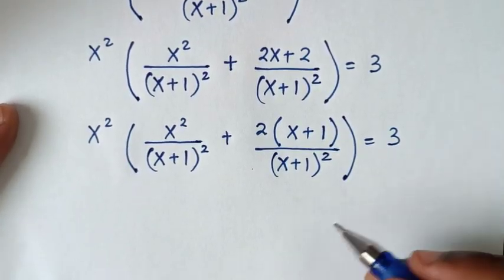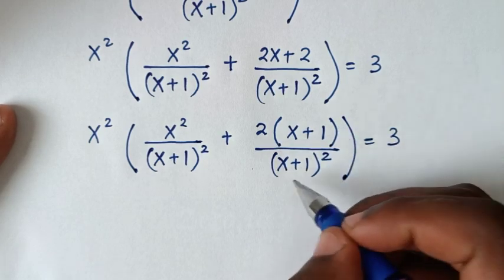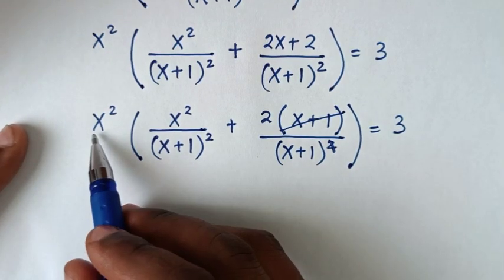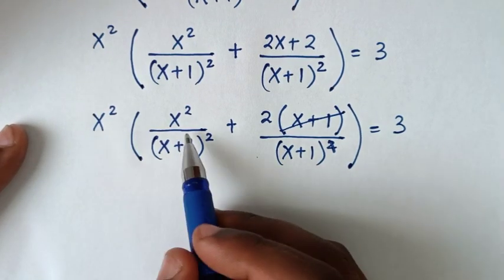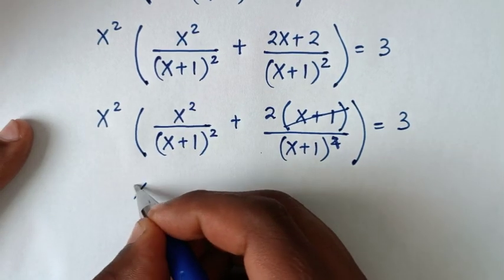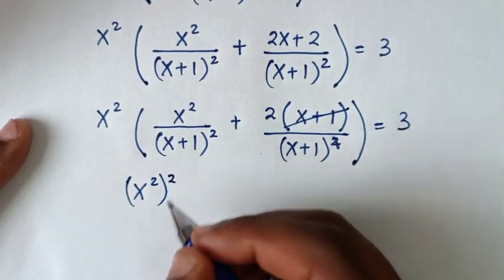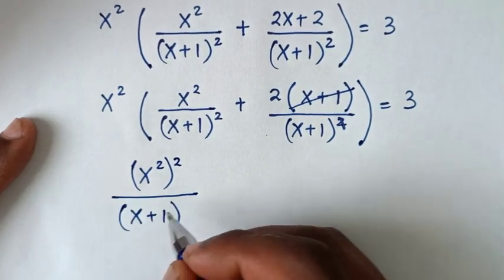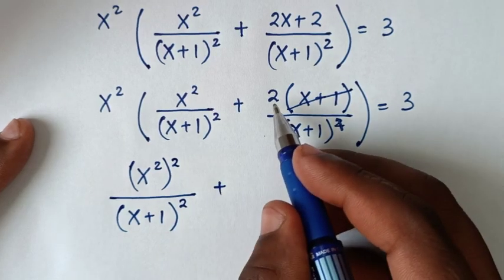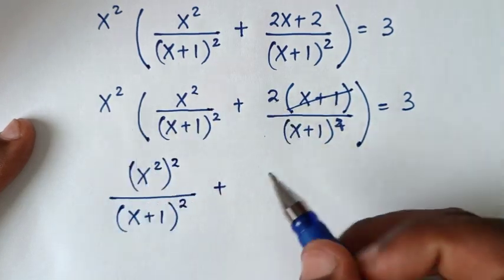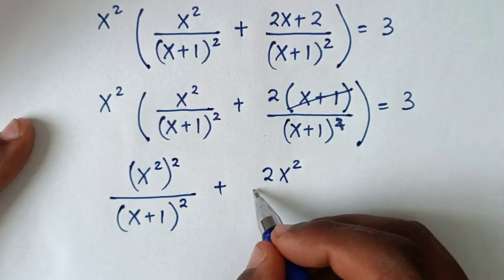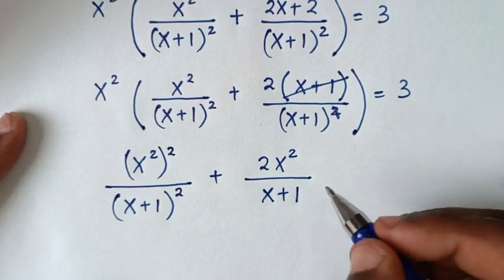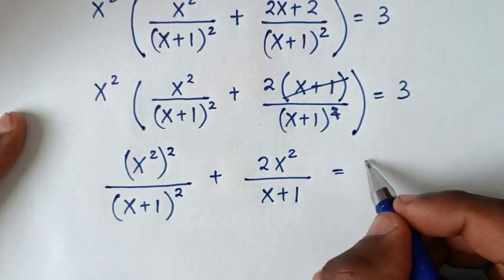From here we can simplify: (x+1)/(x+1)² cancels one power. Taking x² inside the bracket: x²·x²/(x+1)² becomes (x²)²/(x+1)², then plus 2x²/(x+1), equals 3.